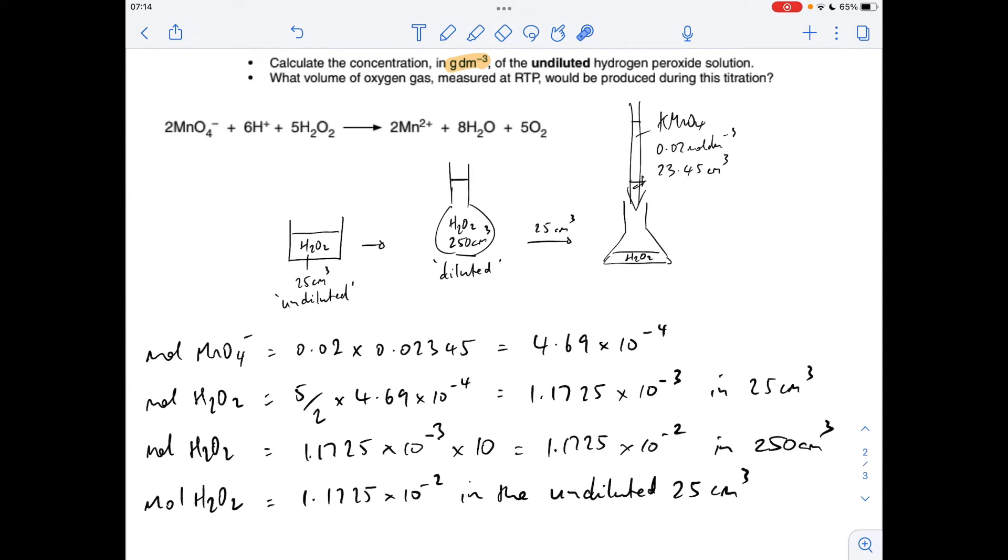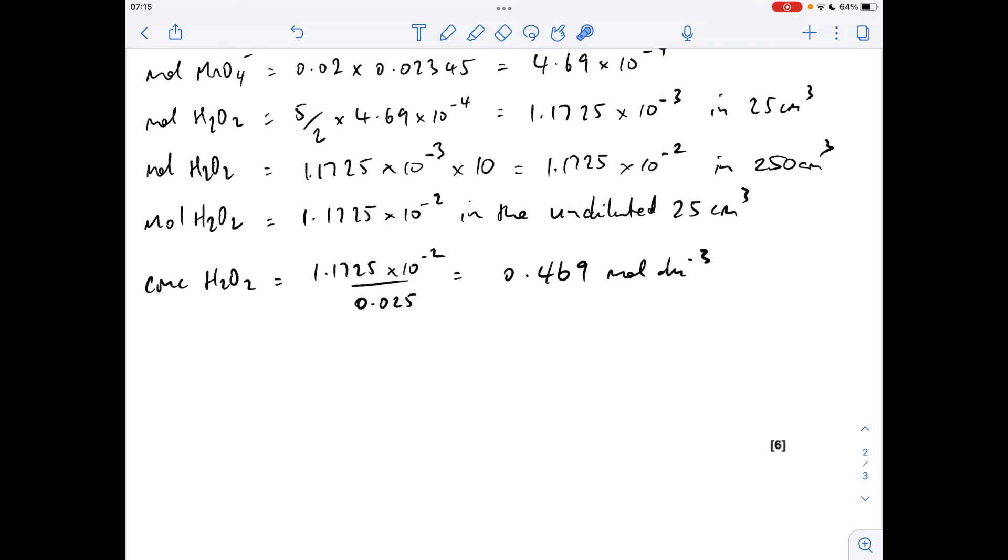And then I'm going to multiply by the MR of hydrogen peroxide, and that'll tell me how many grams I would have in the decimeter cubed. So concentration of hydrogen peroxide in moles per decimeter cubed, that's moles divided by volume in decimeters cubed, 0.469.